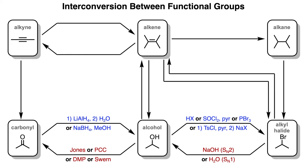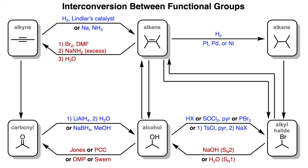Knowing how all of these reactions connect with one another will be extremely useful when doing synthesis problems. So let's do a refresher. To reduce an alkyne to an alkene, you can use H2 with Lindlar's catalyst to form a cis alkene, or you could use Birch reduction with Na and NH3 to form a trans alkene. Then, to reduce an alkene into an alkane, you can use catalytic hydrogenation with H2 and a metal catalyst like platinum, palladium, or nickel. To oxidize an alkene into an alkyne, it is a three-step process: first, undergo bromination with a polar aprotic solvent; second, use NaNH2 in excess; and third, use water to form the alkyne.